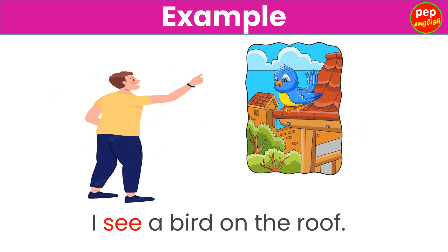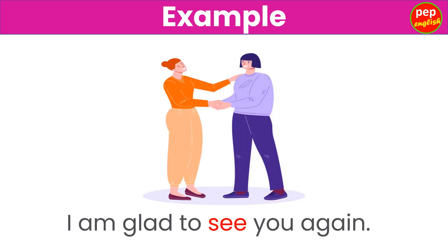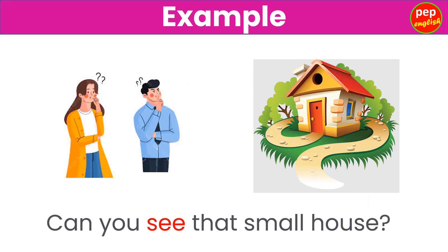I see a bird on the roof. I see a bird on the roof. I am glad to see you again. I am glad to see you again. Can you see that small house? Can you see that small house?